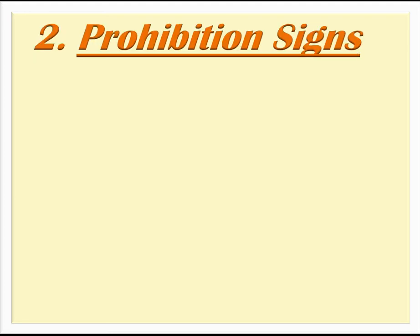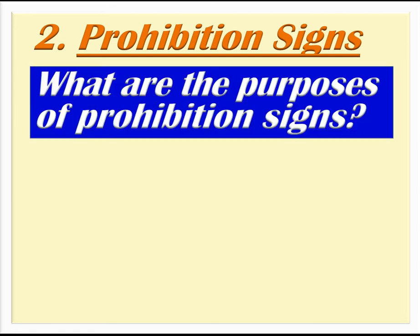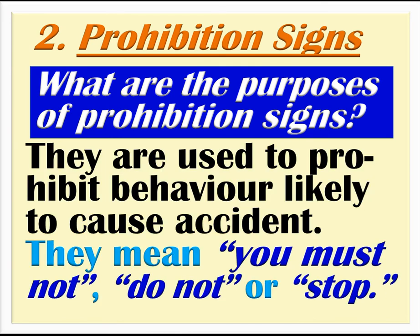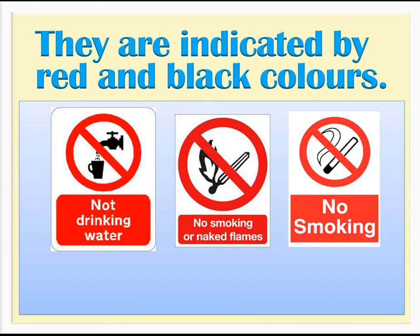Prohibition signs: What are the purposes of prohibition signs? They are used to prohibit behavior likely to cause accidents. They mean you must not, do not, or stop. They are indicated by red and black colors.